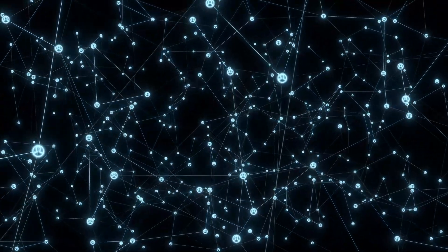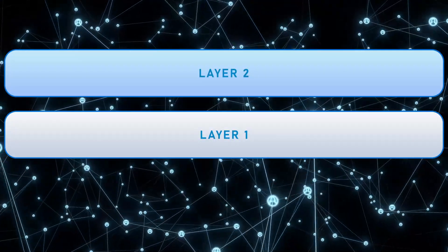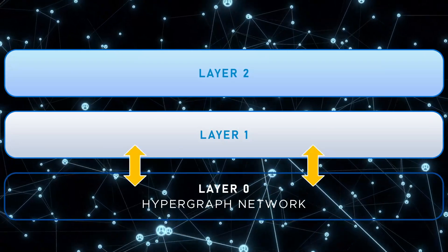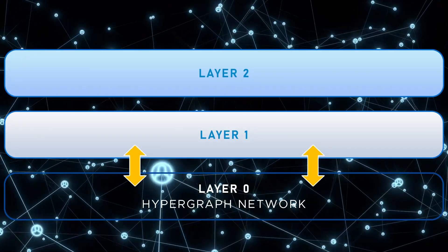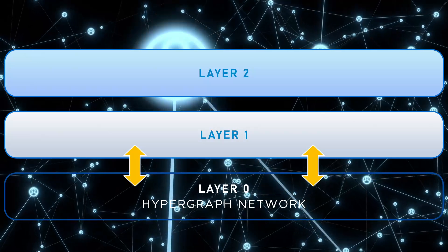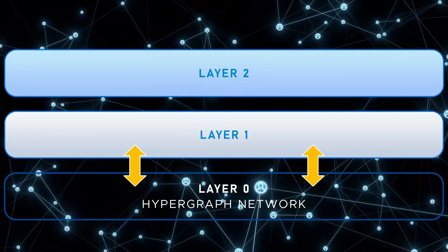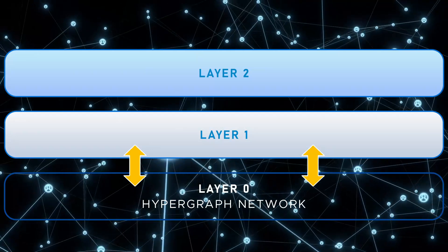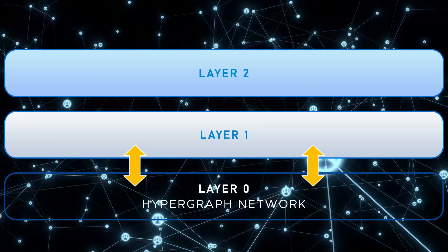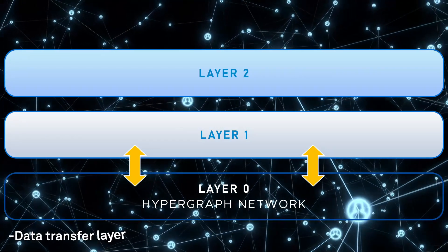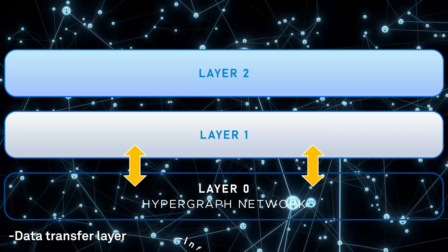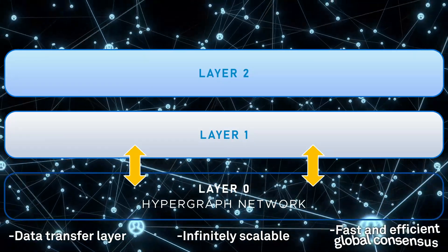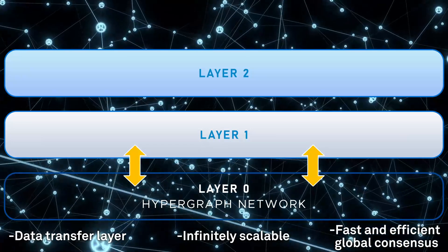While most blockchains are layer 1 or layer 2 solutions, Constellation's hypergraph network is a complete redesign of the blockchain infrastructure, using a directed acyclic graph architecture operating on layer 0. Layer 0 is an underlying data transfer layer with an infinitely scalable node structure that supports fast and efficient global consensus.